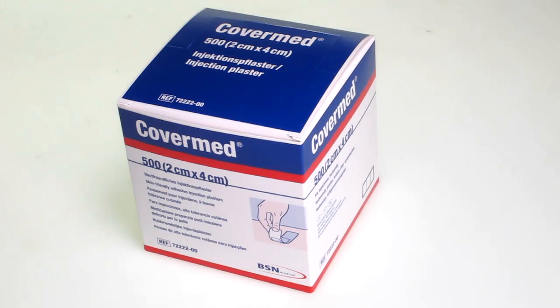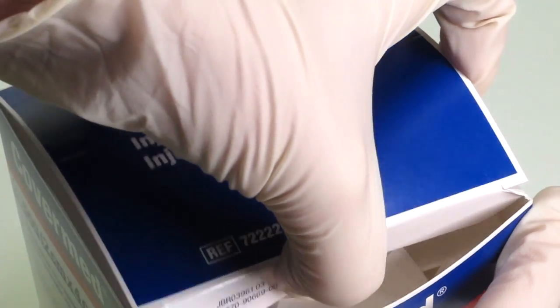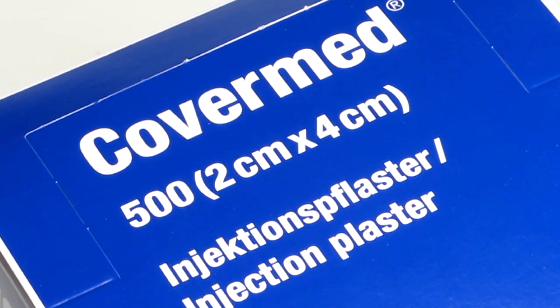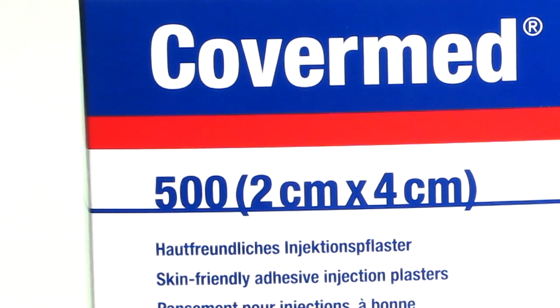Also available from our website is the Smith & Nephew CoverMed pre-cut injection plasters at a size of 2 centimeter by 4 centimeter in a quantity of 500.